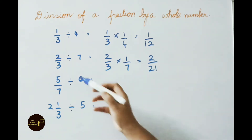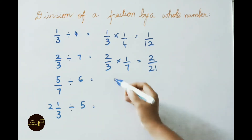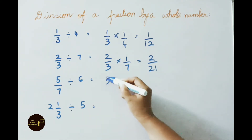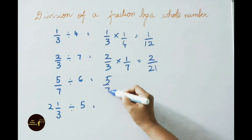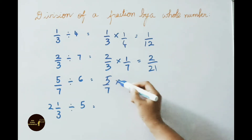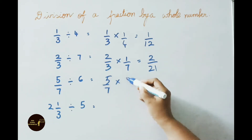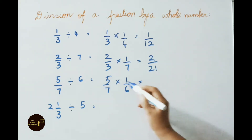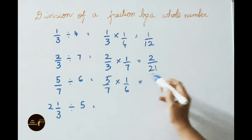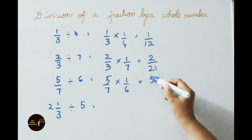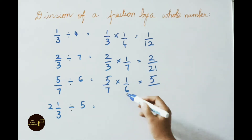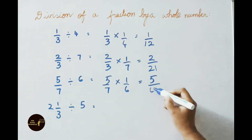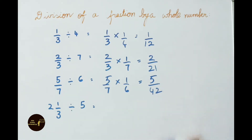See the third one: 5/7 divided by 6. Write down 5/7 × reciprocal of 6, which is 1/6. That equals to numerator: 5 × 1 = 5, denominator: 7 × 6 = 42. So the answer is 5/42.